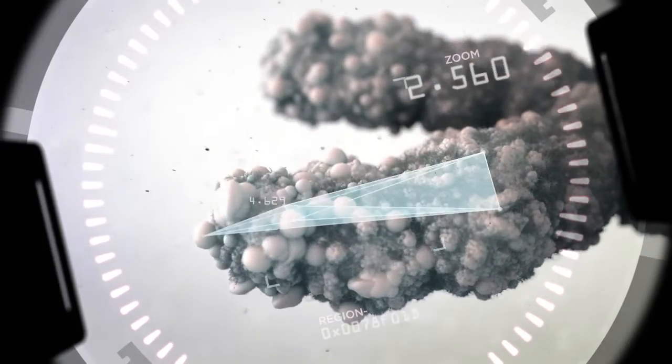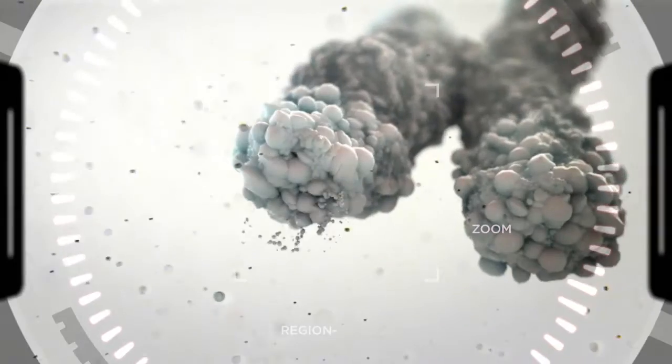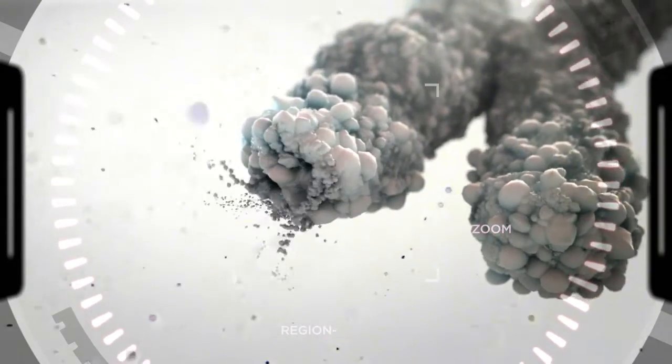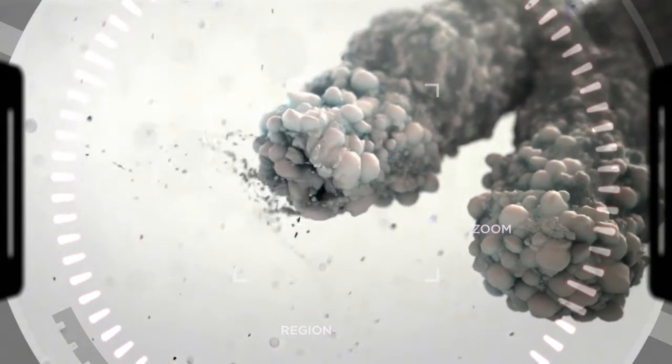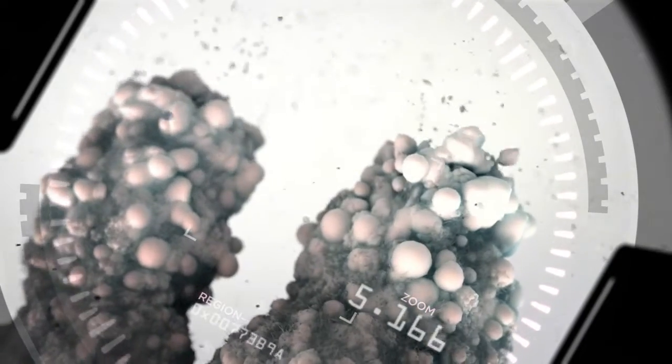When we are born, our telomeres are long, but as time goes on, they begin to shorten. So short, in fact, that our telomeres fray, similar to the end of a shoelace, and our journey called aging begins.